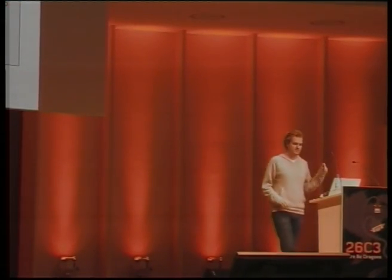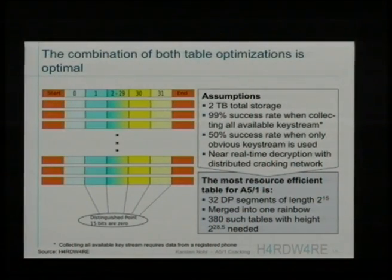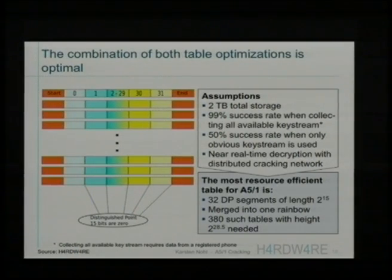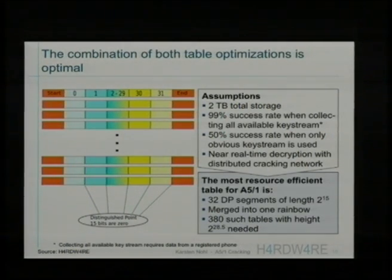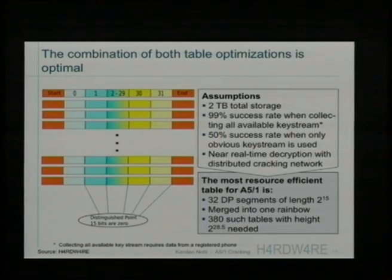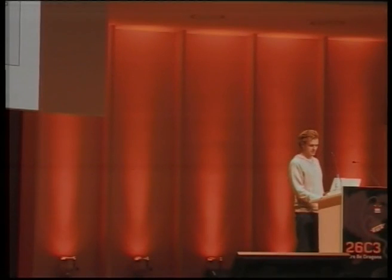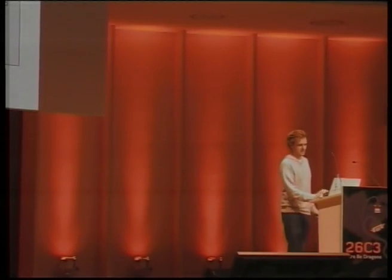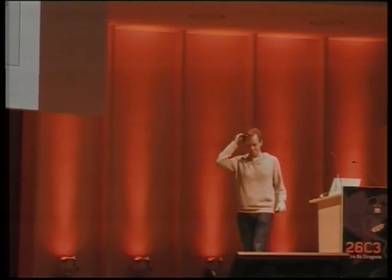We try both approaches — both have advantages — and I think we're the first to apply both at the same time, which is one of the optimizations we use to make this much more practical than previous A5/1 attacks. We are computing 32 distinguished points, and after each distinguished point we change the color of the rainbow. So here's a rainbow with 32 different round functions, each ending in a distinguished point, and we store only the first and last column.